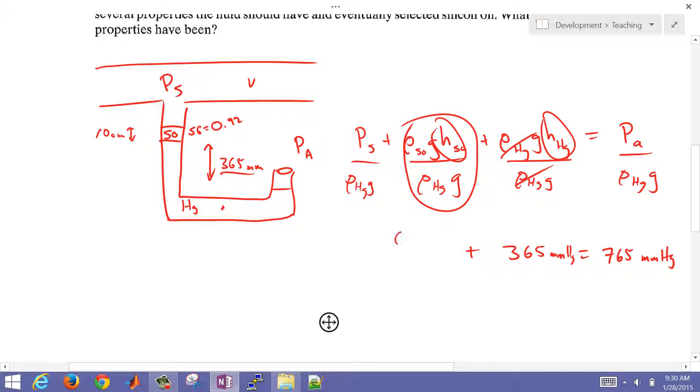If I take the division of the specific gravity of the silicon oil divided by that of mercury, and the g terms are going to cancel out. Then I have my 10 centimeters, which is going to be 100 millimeters, and then I also have this P_s over rho mercury g.